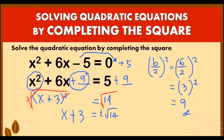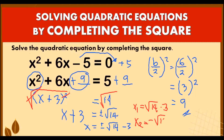Next, we move the positive 3 from the left side to the right. So x becomes equal to plus or minus √14 minus 3. Therefore, x₁ = +√14 − 3, and x₂ = −√14 − 3.